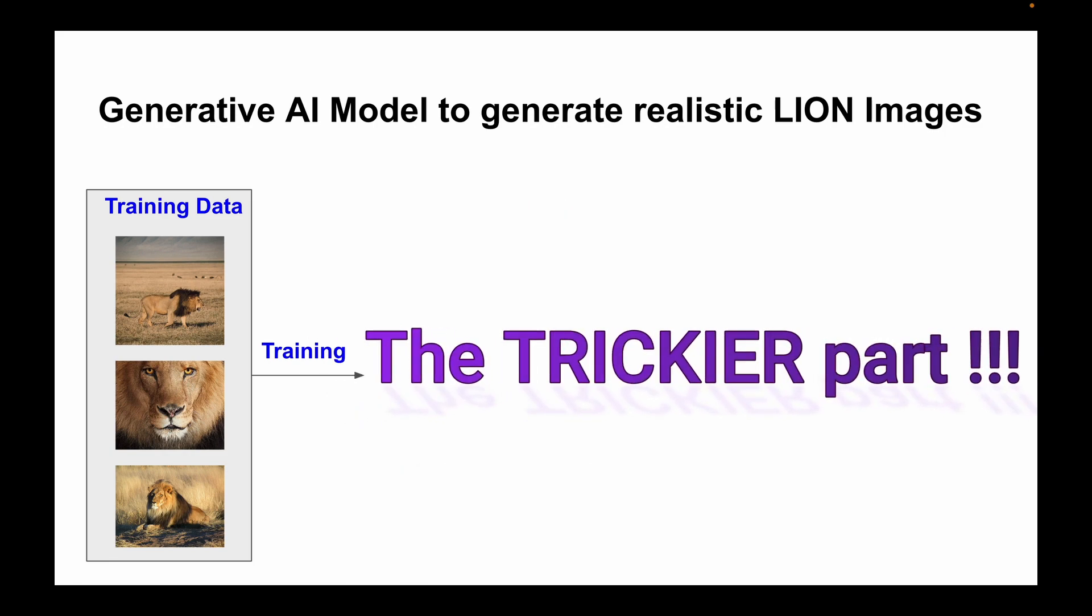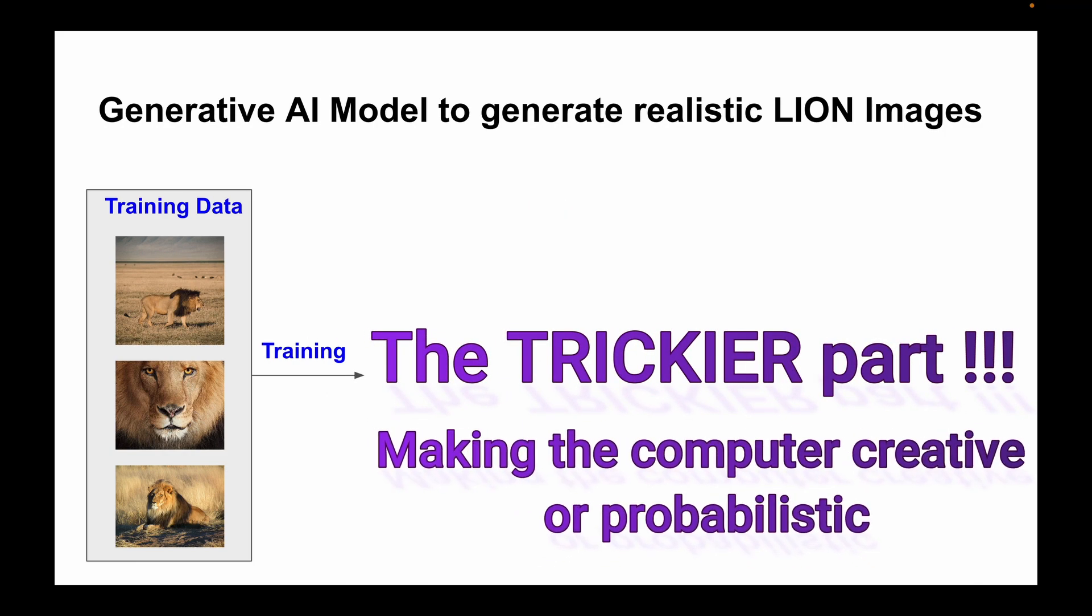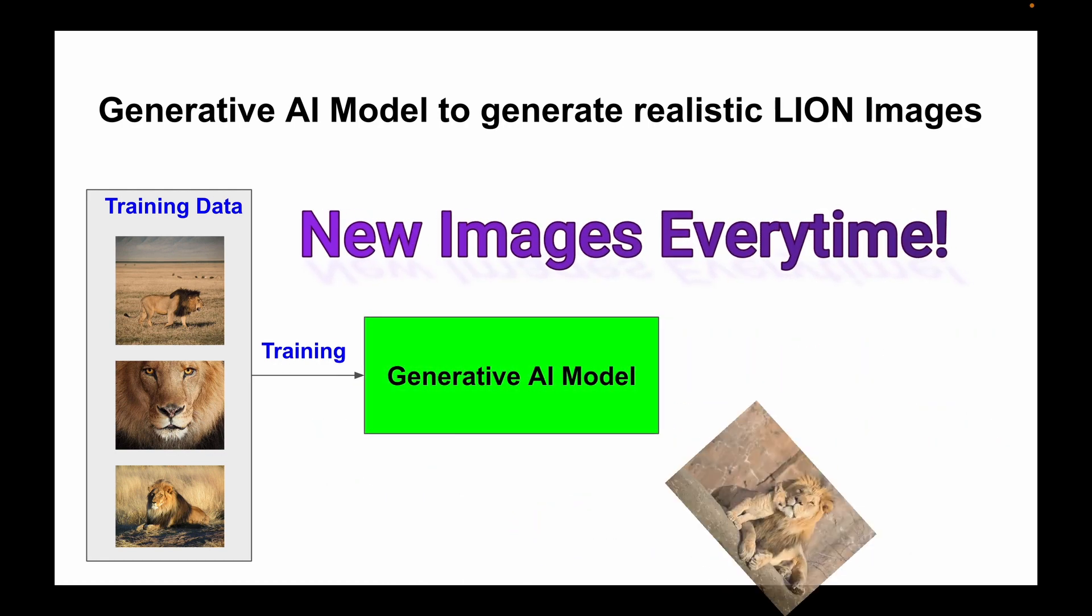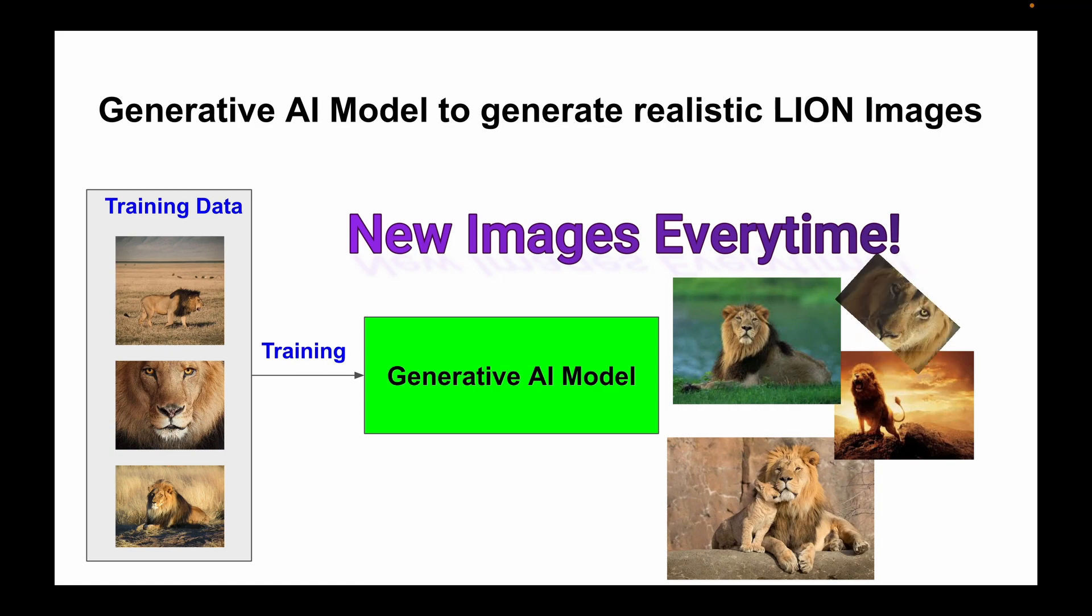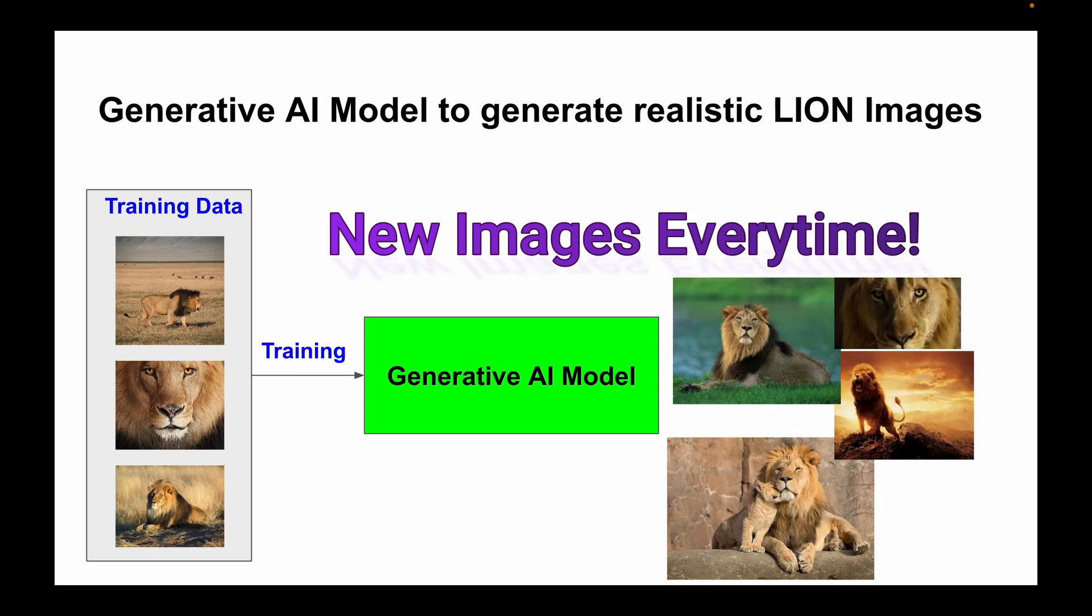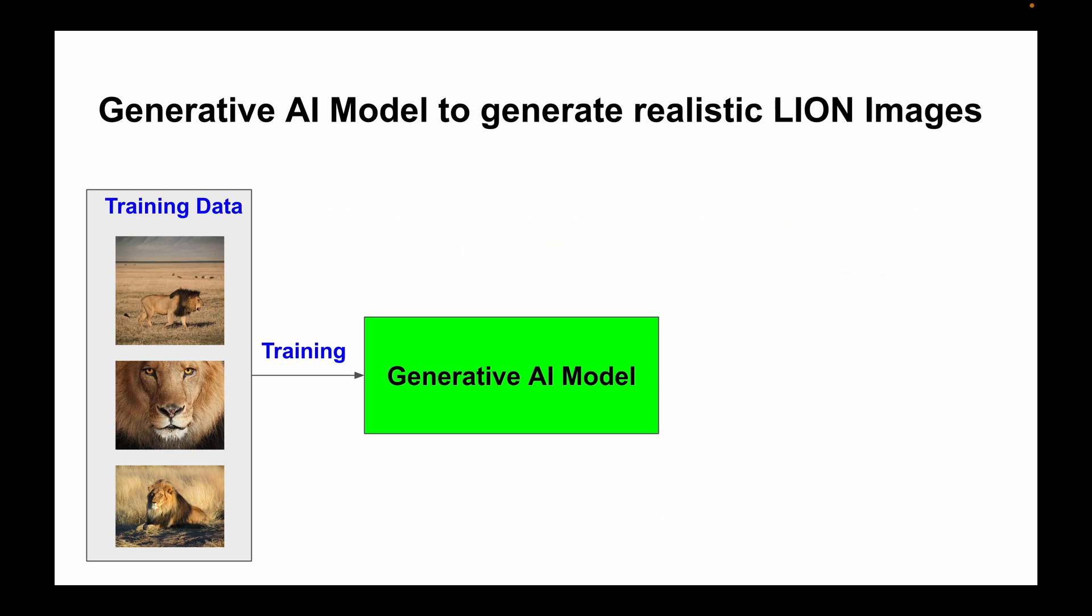Now the trickier part is making this computer creative or probabilistic. You don't want the same image to generate every time. You want it to come up with different and interesting versions of an image. So you need to add a bit of randomness to its thinking while prediction.